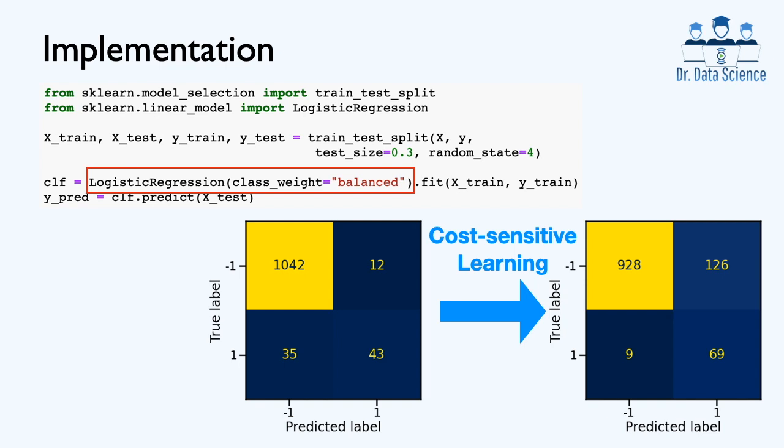However, this improved result comes at the cost of losing accuracy for the first row of these two matrices. Previously, we did a great job of identifying negative samples. But now if you compare with the previous case, the cost-sensitive learning method compromises accuracy in that respect a little bit.